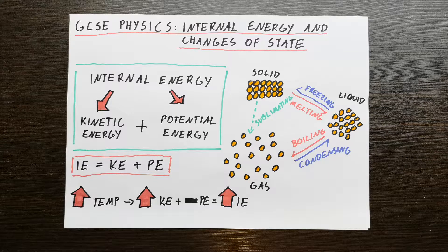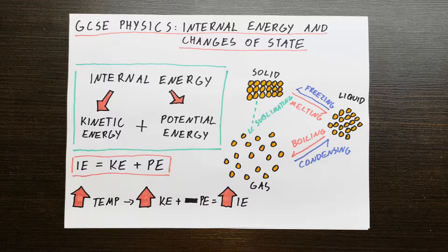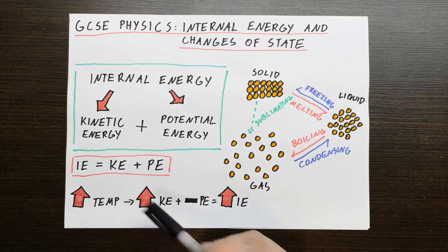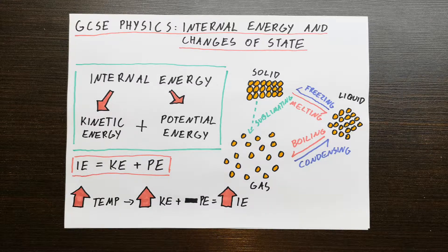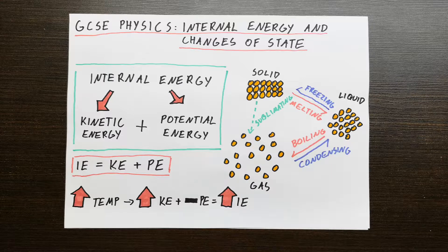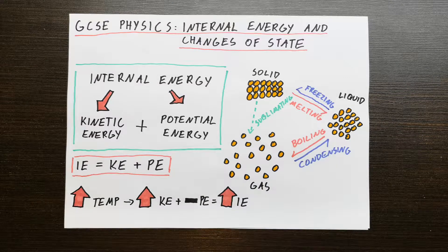So what happens when we are heating a particle? When we heat a particle — say, put some water in a beaker and start heating it up — what we are doing is increasing temperature. Temperature refers to the particle's kinetic energy, so the higher the temperature, the higher the kinetic energy of the particles. The potential energy stays roughly the same, but it is the kinetic energy that's the main factor — it's the kinetic energy that increases when we increase the temperature. And because we're increasing the kinetic energy without decreasing potential energy, our total internal energy increases.